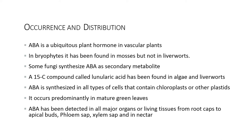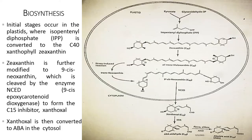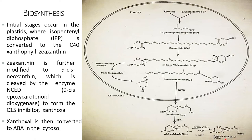Biosynthesis of abscisic acid takes place in the plastid. In the initial stage, isopentenyl diphosphate (IPP) is converted into a 40-carbon xanthophyll called zeaxanthin. Zeaxanthin is further modified into 9-cis-neoxanthin, which is cleaved by the enzyme NCED (9-cis-epoxycarotenoid dioxygenase) to form a 15-carbon inhibitor called xanthoxin. Xanthoxin is then converted into abscisic acid in the cytosol.